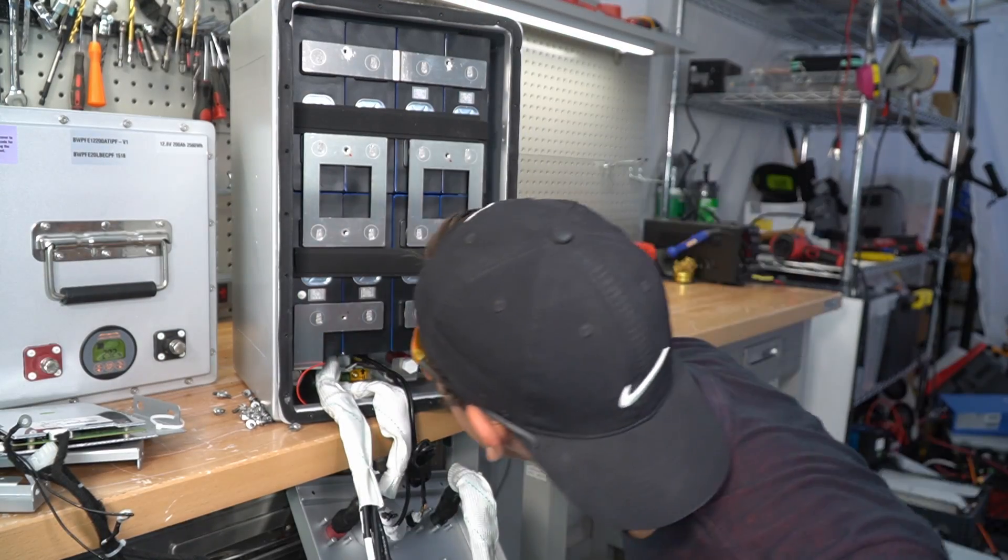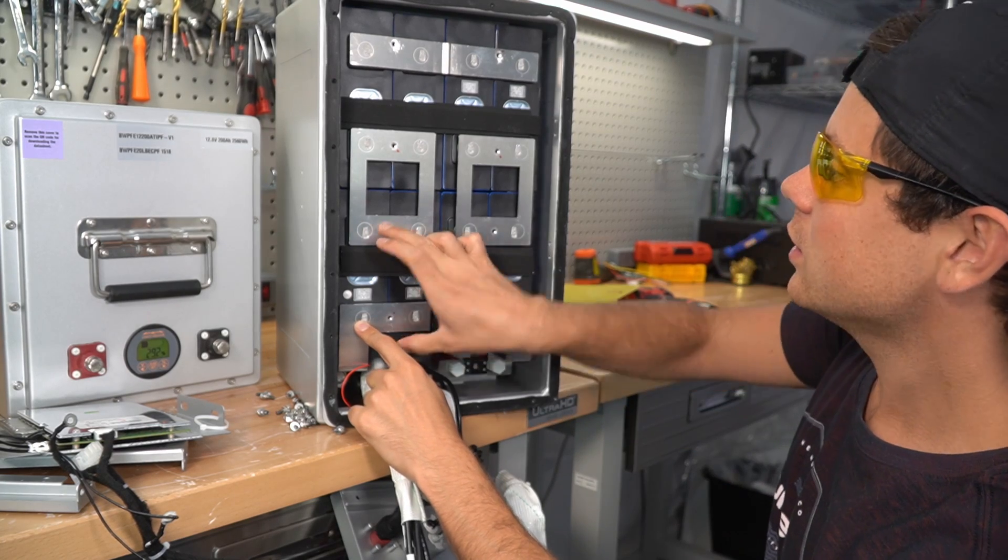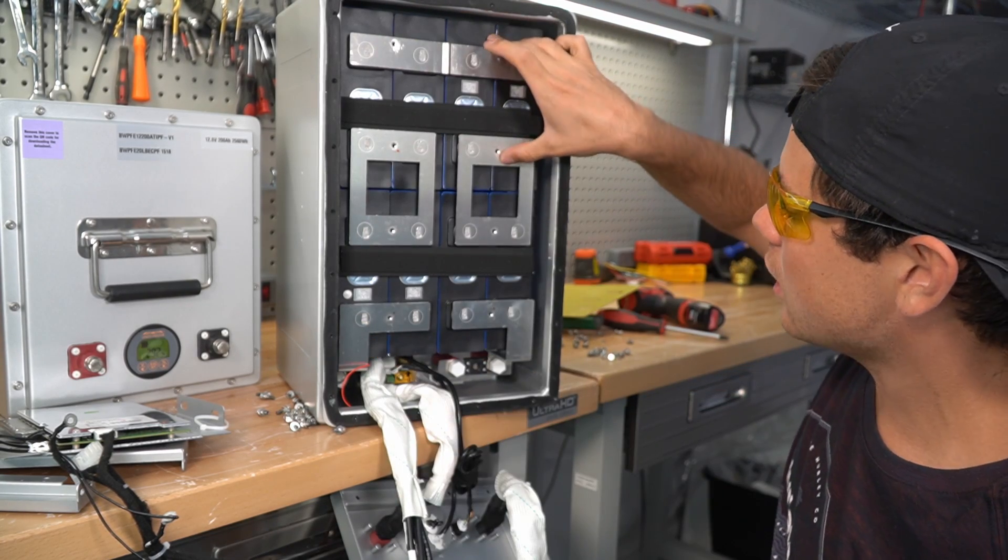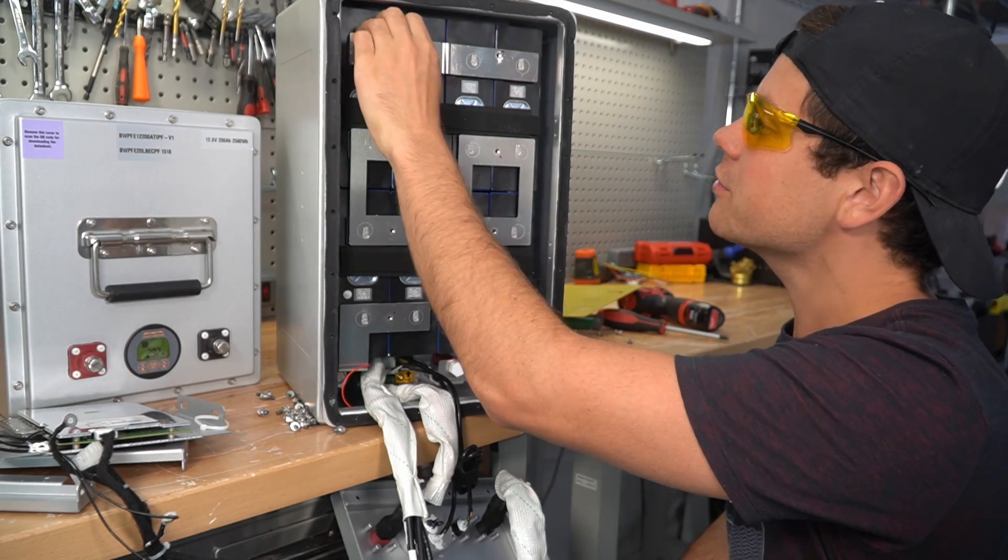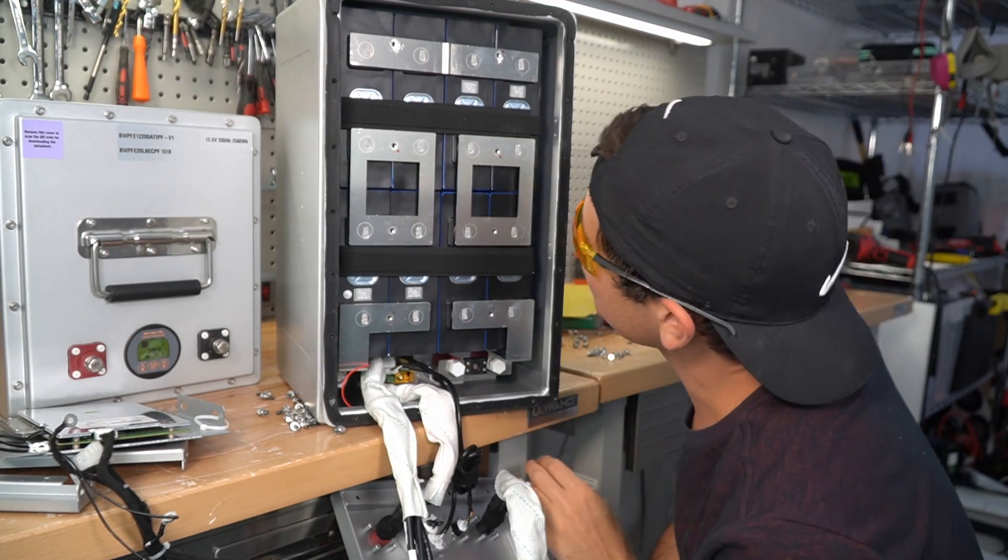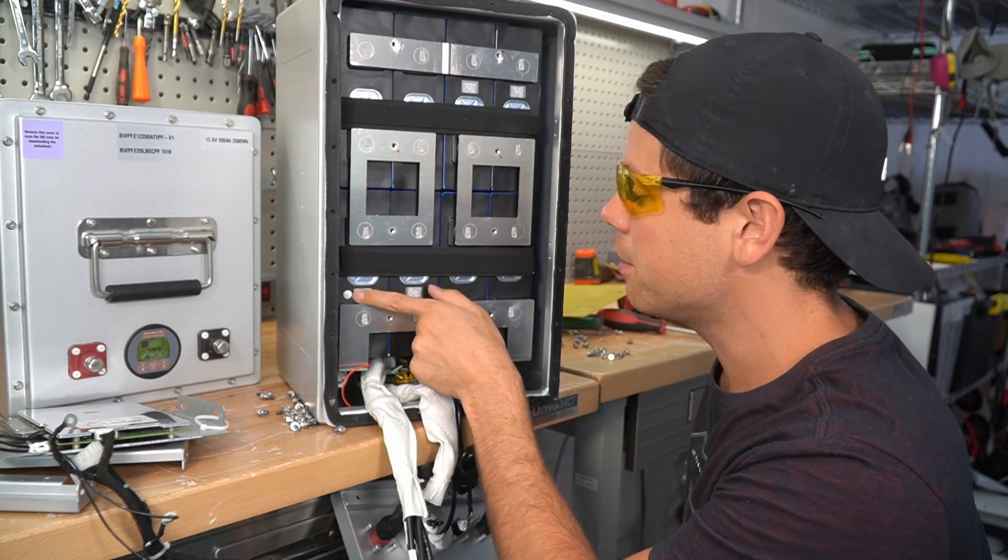Holy cow. These are all brand new cells. Main negative, first cell, second cell, third cell, fourth cell. And then we have the main positive right here. These are some huge, very thick bus bars. And this is where the temperature sensor was connected to the battery, but I pulled it off.